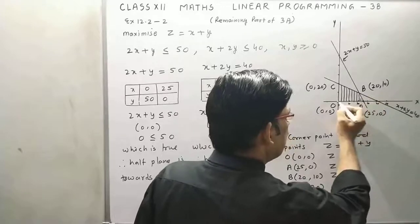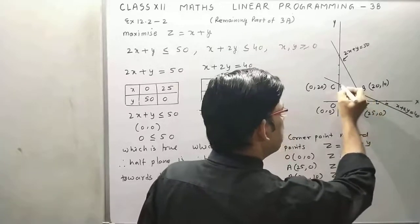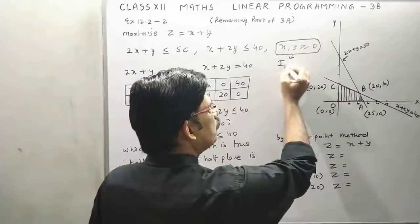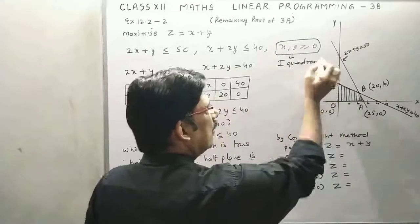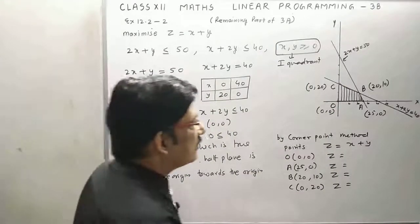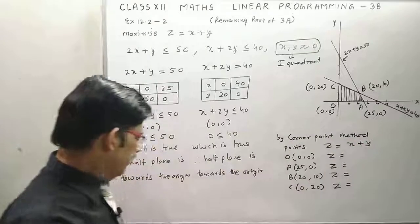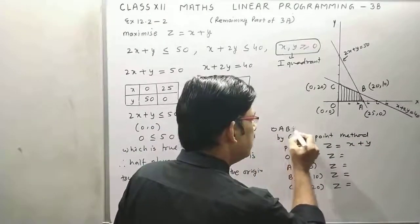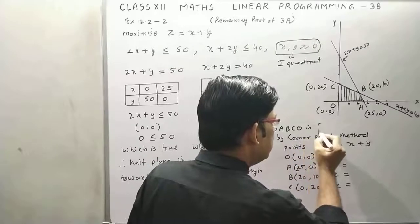Now this is the feasible region and this means only first quadrant. We have to use the first quadrant only. Now this is origin. Now this is O, A, B, C. O is feasible region.